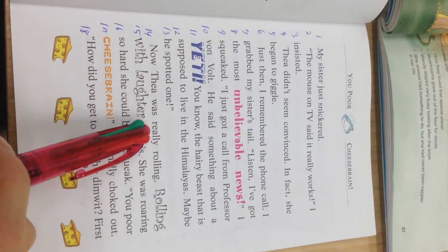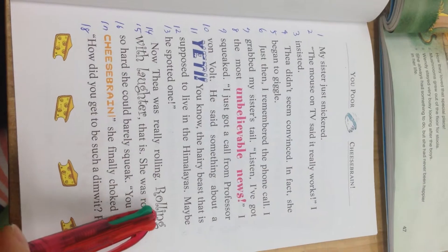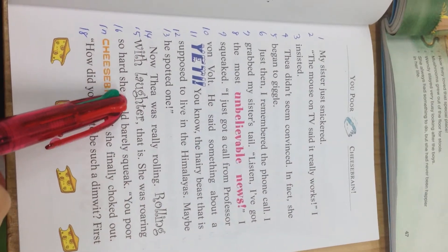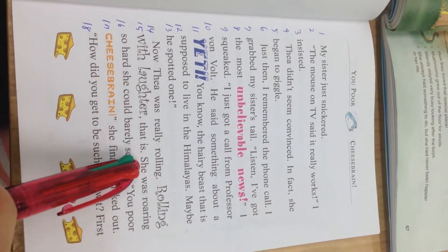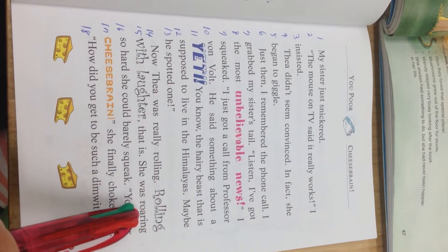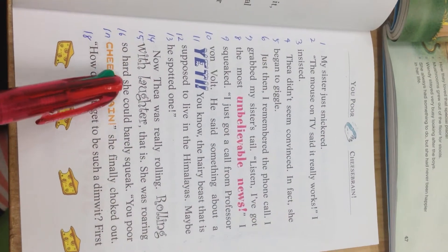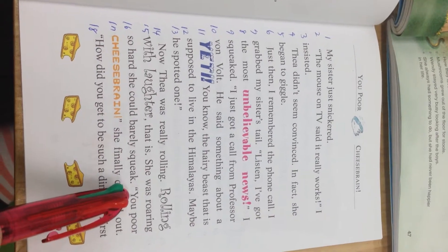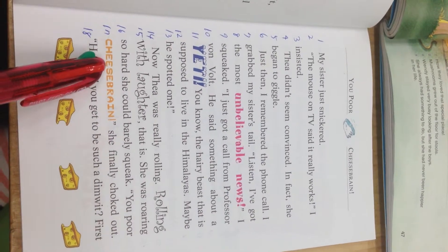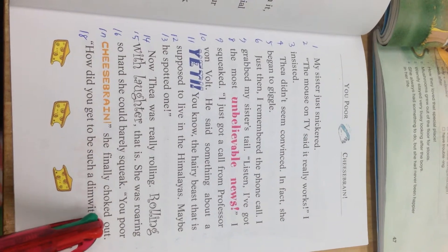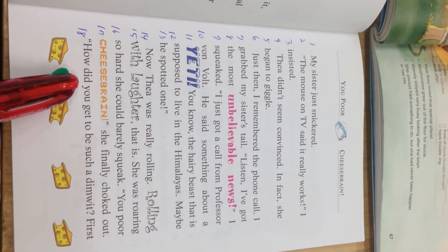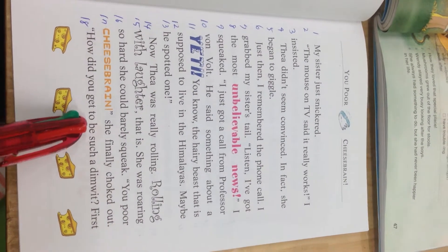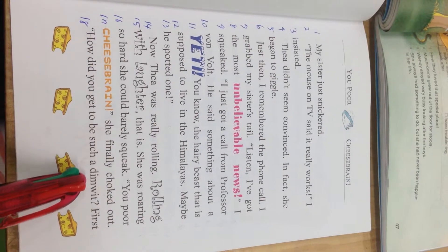Now, Thea was really rolling with laughter. She was roaring so hard she could barely squeak. You poor cheesebrain. She finally choked out. How did you get to be such a dimwit?